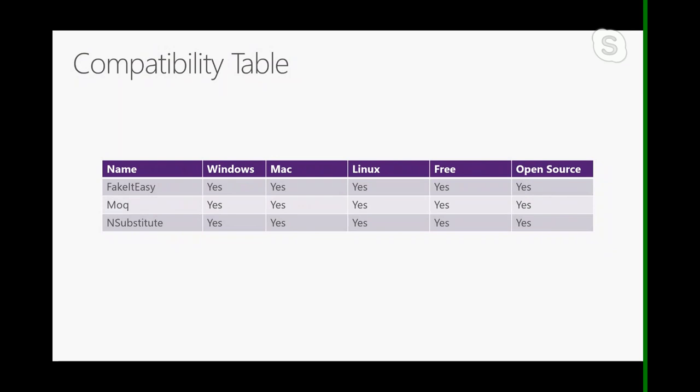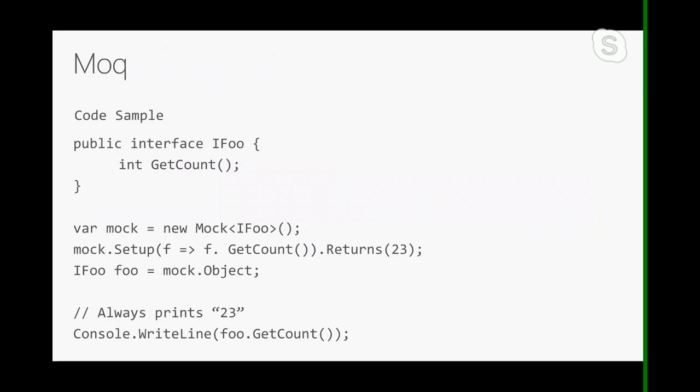Moq is used by a lot of people including companies and indie developers. FakeItEasy is also quite intuitive to use, and there's also NSubstitute. Here's a simple example: we have an interface called IFoo that defines a single method called GetCount. In a situation where we'd like to test a method that takes IFoo as an argument, we can choose to mock the IFoo interface as opposed to using a concrete class — for example, when IFoo is like a database client.